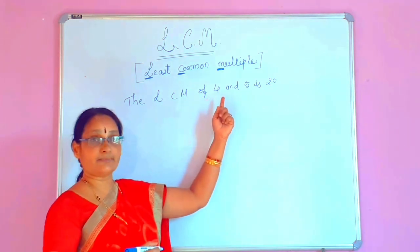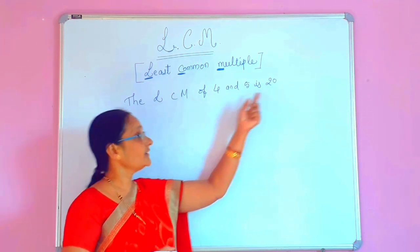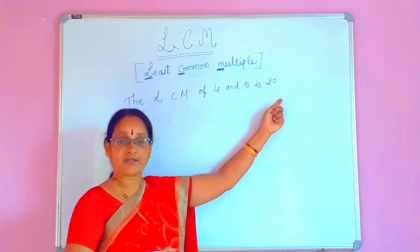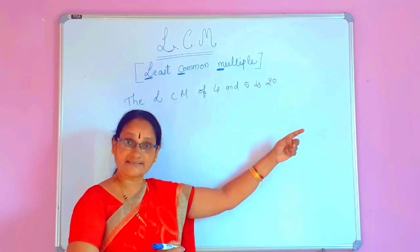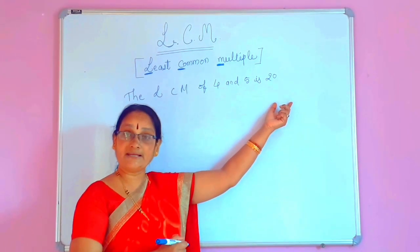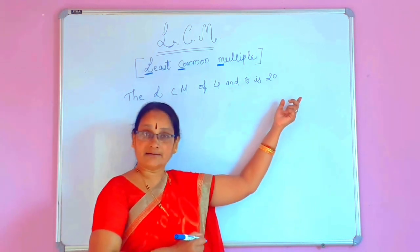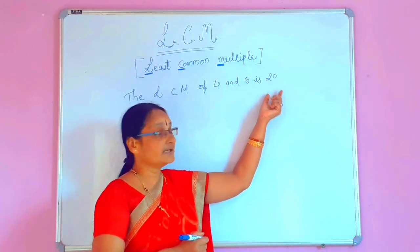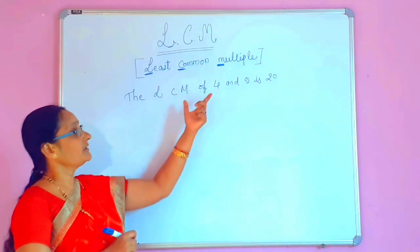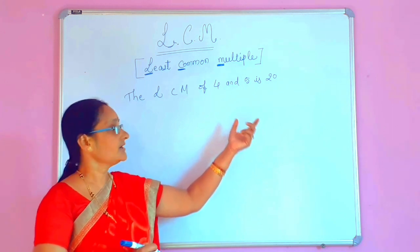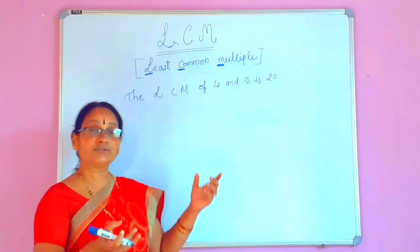Now just observe these 3 numbers: 4, 5 and 20. How are they related? 4 fives are 20. 5 fours are 20. That means the least multiple is divisible by both the given numbers. The LCM, or the least common multiple which is found out by us, is divisible by both the given numbers. Whenever we find out the LCM, that number is divisible by both the given numbers.